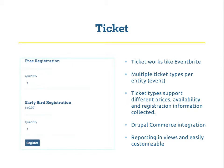The key points it provides are the ability to have multiple ticket types per event — a paid ticket, a premium ticket, a free ticket, and as many as you can imagine. Each ticket type supports different prices, different availabilities based on time or quantity, and collects different information at checkout. For checkout, we integrated Drupal Commerce, and for all reporting we use Views, so it's really easy to customize.